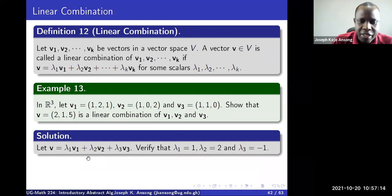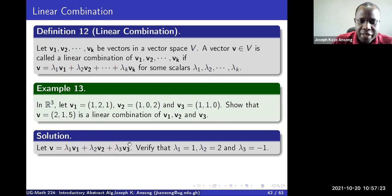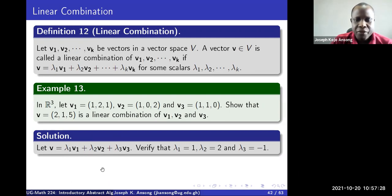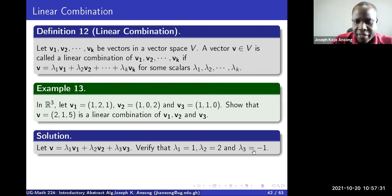The point is: can we find these scalars? Can we find the scalars lambda 1, lambda 2, lambda 3 such that when we combine them like this, we get the vector v? So you should try it. You should get this.